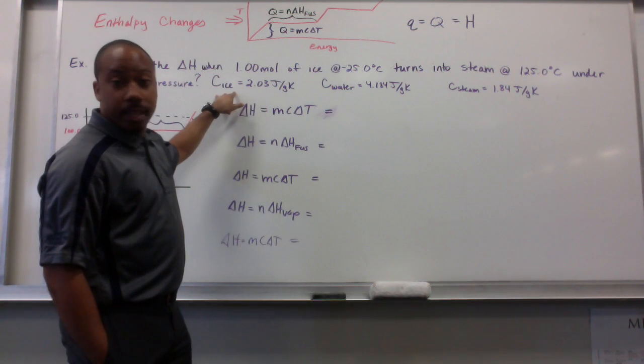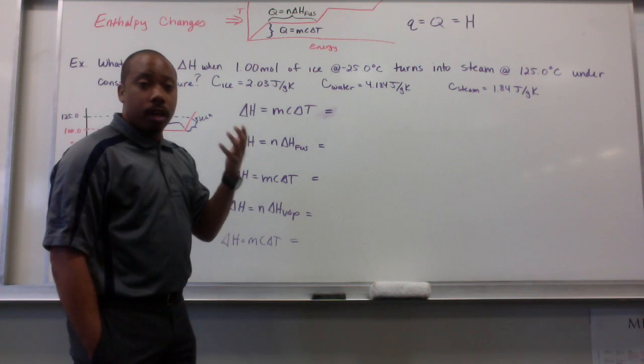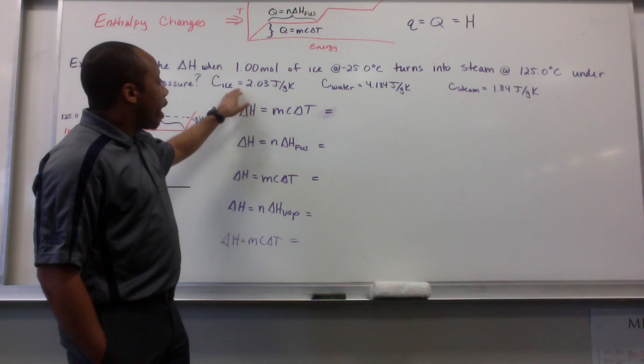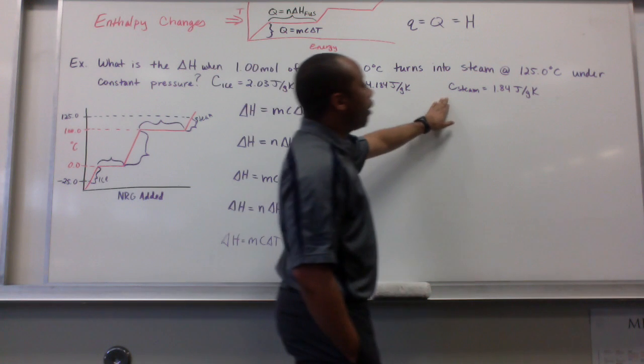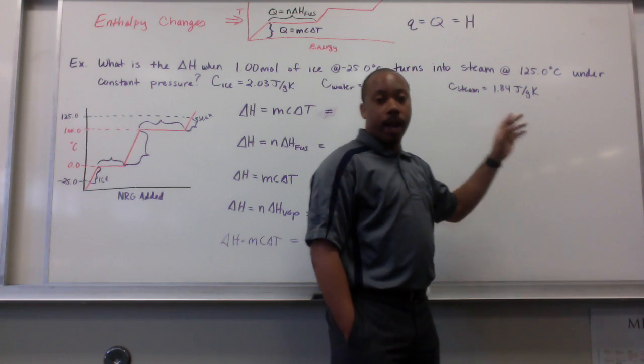Now, ice's specific heat is going to be lower than that. And that should make sense because it will melt more easily than water will heat up. So, ice is at 2.03 joules per gram Kelvin. And steam heats up even better. It's 1.84 joules per gram Kelvin.